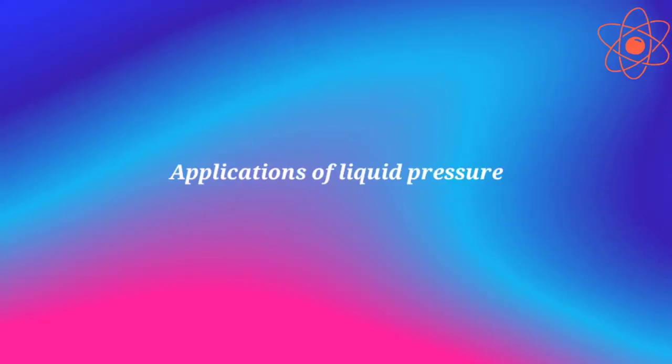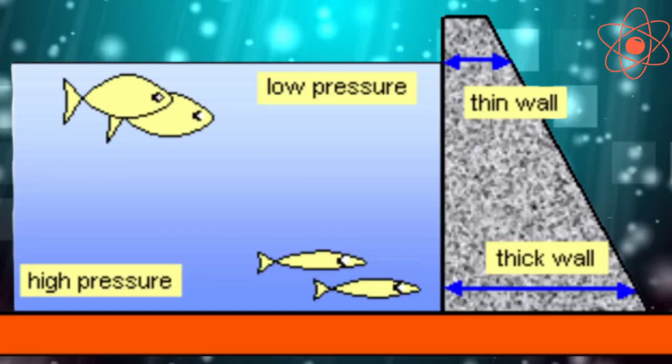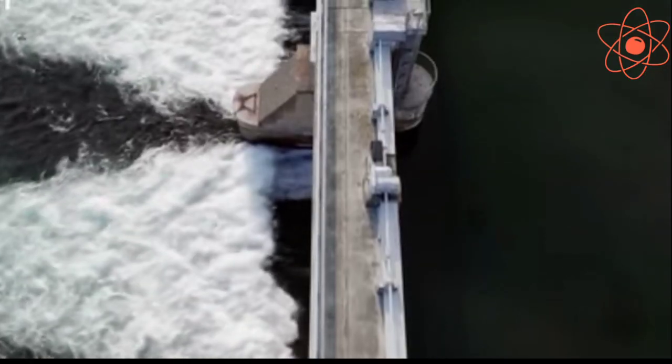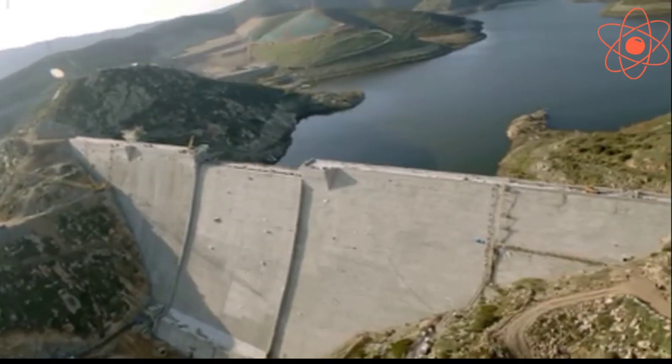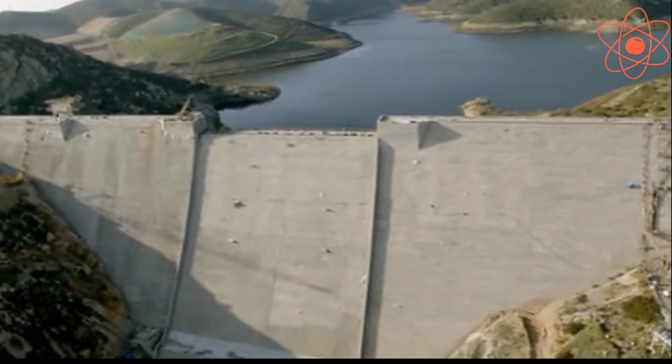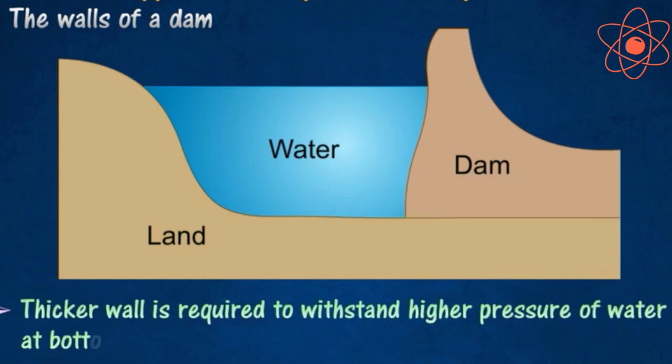Now applications of liquid pressure. The walls of a dam are made thicker at the bottom. The reason is that the pressure exerted by a liquid increases with its depth. A thicker wall is required to withstand greater pressure and therefore the wall of the dam is made with thickness increasing towards the base.